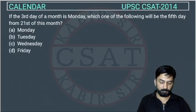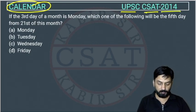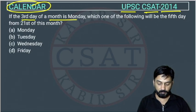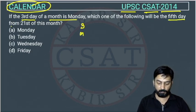This is a question from the calendar chapter asked by UPSC in their CSET paper of 2014. If the third day of a month is Monday, which one of the following will be the fifth day from the 21st of this month?